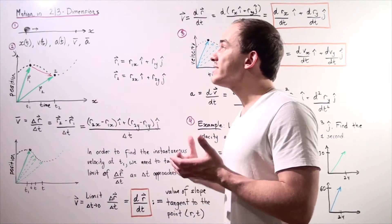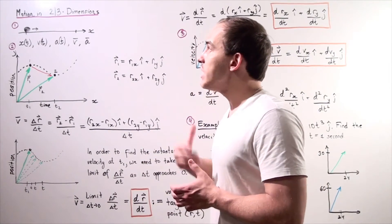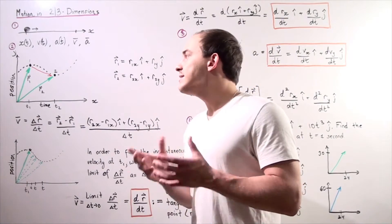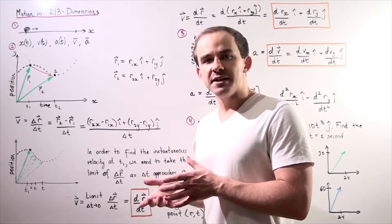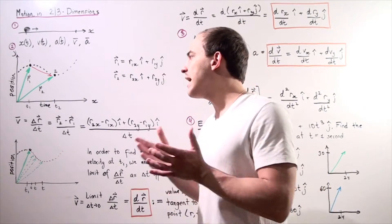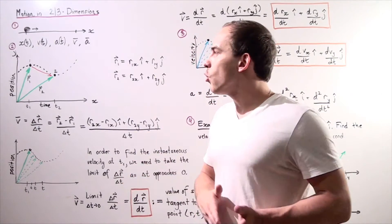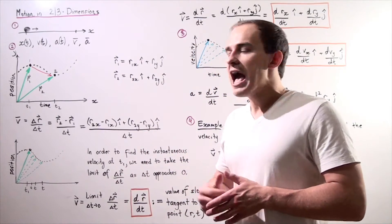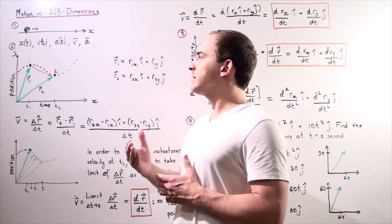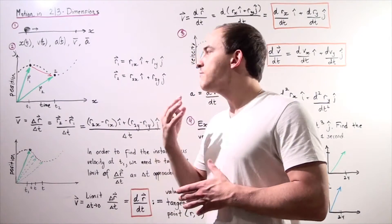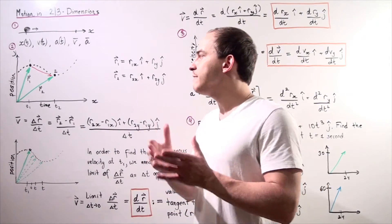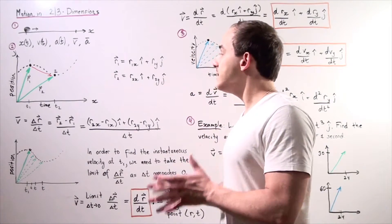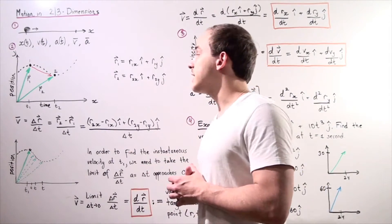But when we're solving problems where objects are moving in two or more dimensions, things get relatively complicated because now we're dealing with vectors that are in two or three dimensions. Recall that vectors in two dimensions have two vector components, and vectors in three dimensions have three vector components. So adding vectors in two and three dimensions is not that easy — it's relatively complicated.